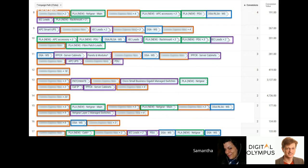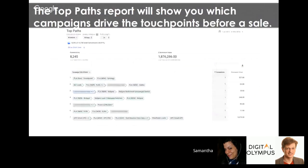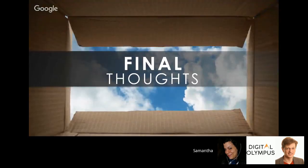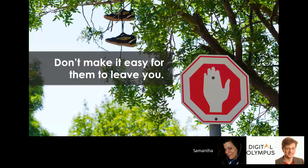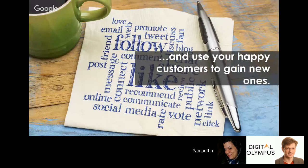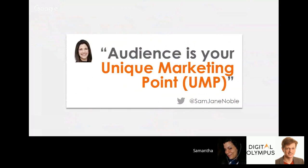It's important to consider how different campaigns, keywords, and ad groups interact to help someone through the purchase journey before deciding what to switch off. You can use the Assisted Conversions report in AdWords to see last-click conversions alongside click-assisted conversions and their value. The Top Paths report shows which campaigns get clicked in sequence. Remember: work really hard to obtain a new customer, don't make it easy for them to leave, and make sure your happy customers help you gain new ones. Your audience is your unique marketing point.